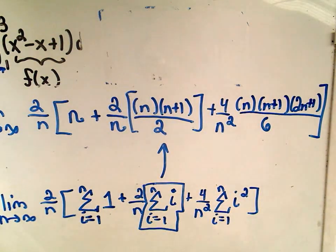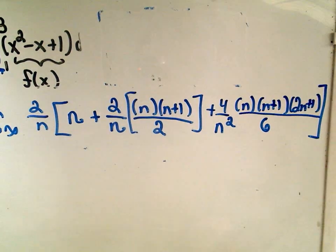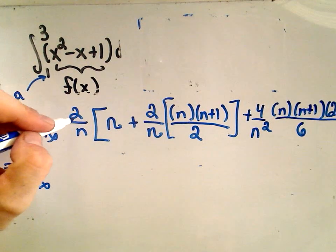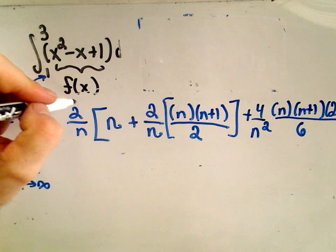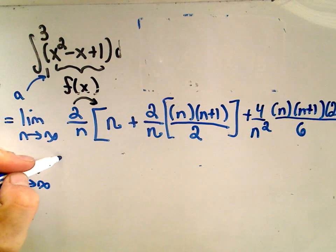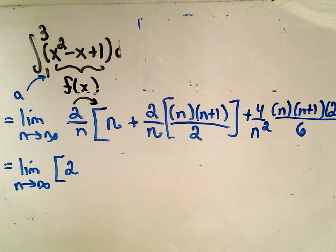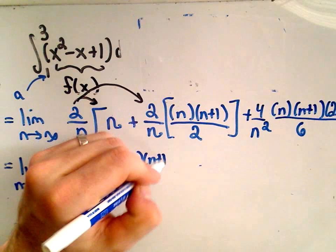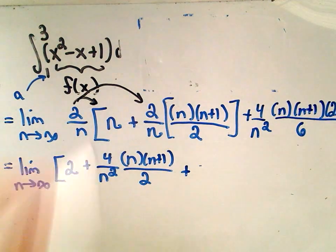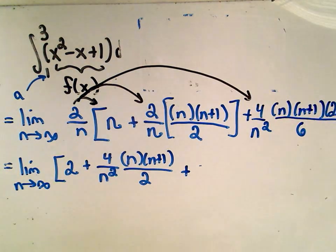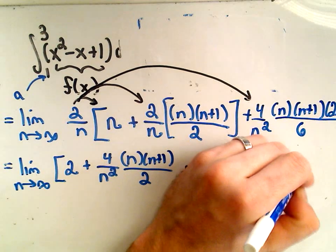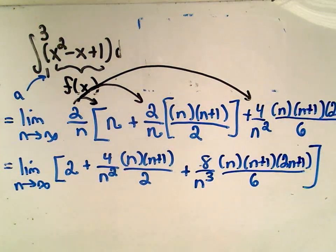Okay, so at this point, now I've just got a limit problem that I have to simplify down. It's going to be a little tedious, but not the end of the world. So at this point, what I like to do is I distribute my 2 over n back inside. So if I take 2 over n times n, notice that the n's would simply cancel out, and I would be left with 2. If I multiply the 2 over n times 2 over n, well, that's going to give me 4 over n squared. And then we still have n times n times n plus 1 over 2. And then if I distribute it to the last piece, we'll have 8 over n cubed. And then we have n times n plus 1 times 2n plus 1 all over 6. Okay, so we're almost there.